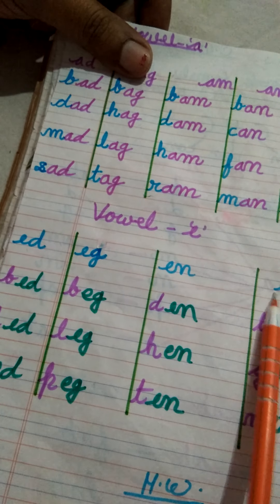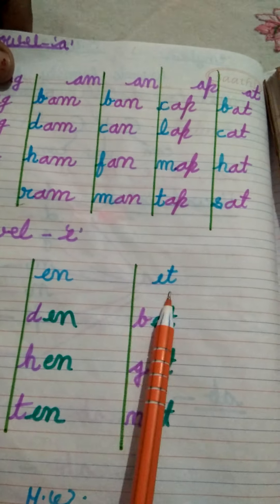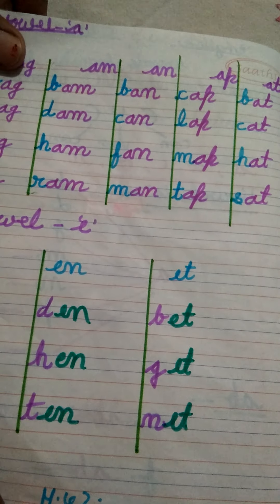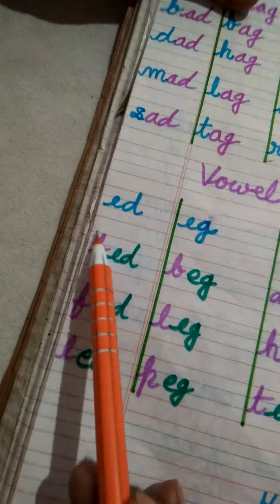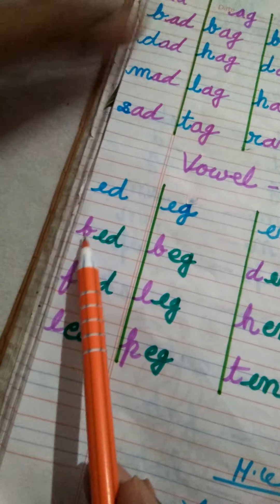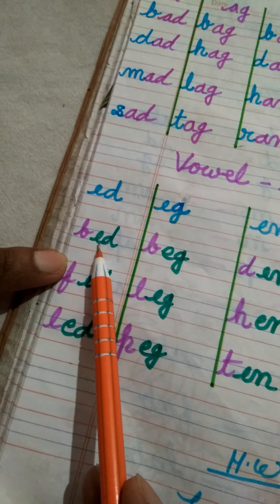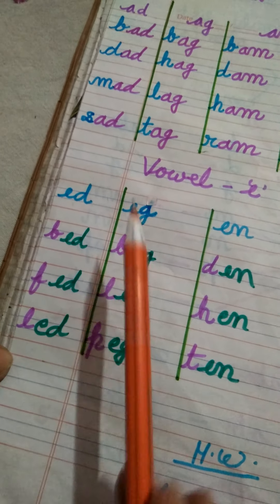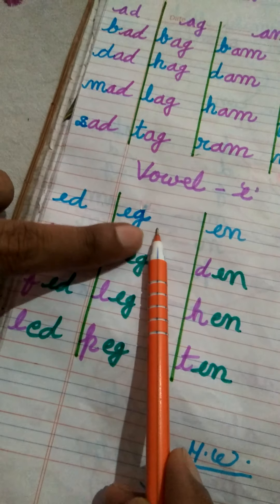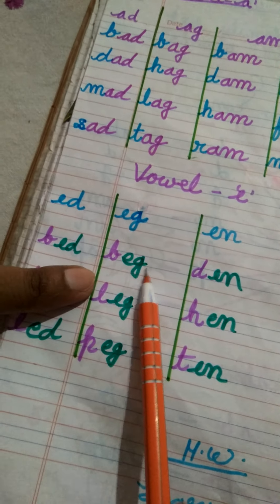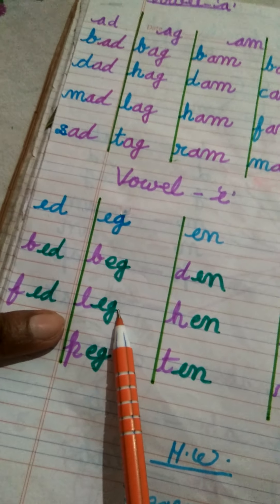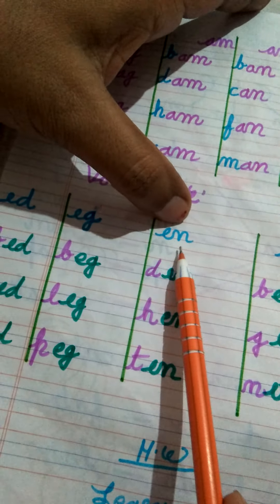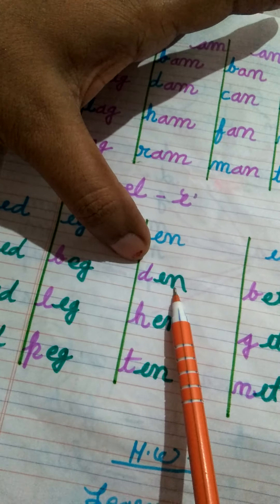Okay students, today मैं आपको phonics sound में A vowel के letters बता रही हूं। A, D — Add. इस family से related words: B + Ad = Bad, D + Ad = Dad, M + Ad = Mad, S + Ad = Sad. Okay?